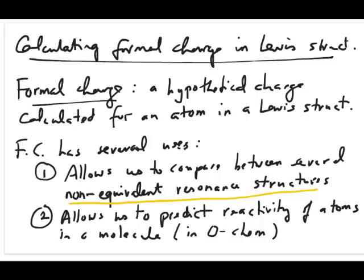Predicting reactivity is something you will do more in organic chemistry and not in this class, but it becomes very useful because an atom that has a positive charge is called electron deficient. It would want to react with another atom that has a negative charge on it. That's how you can use formal charge to predict reactivity.